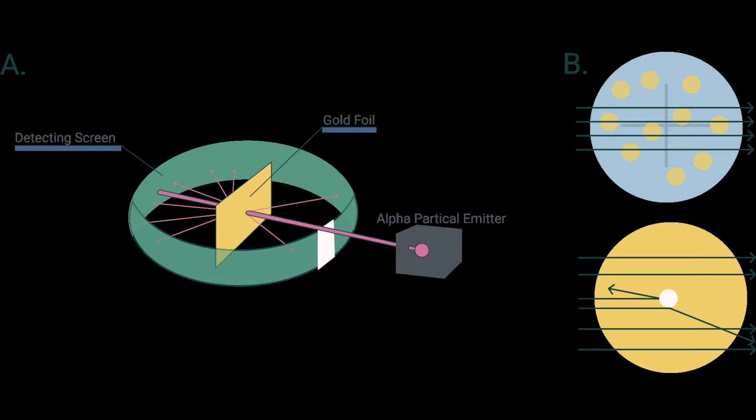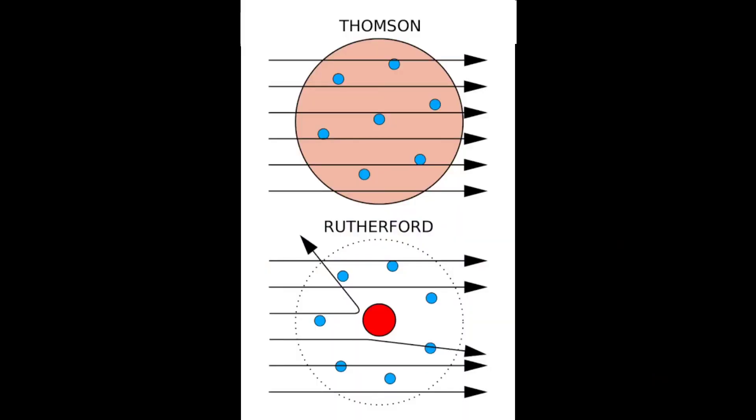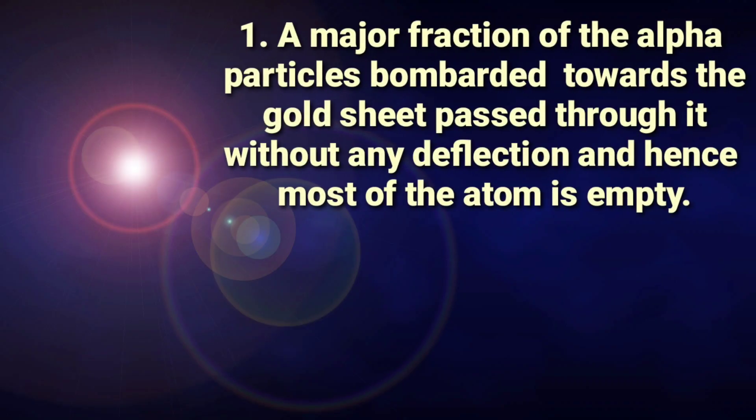Rutherford made certain observations that contradicted Thompson's atomic model. Now observations of Rutherford's alpha scattering experiments are number one, a major fraction of the alpha particles bombarded towards the gold sheet passed through it without any deflection and hence most of the space in an atom is empty.